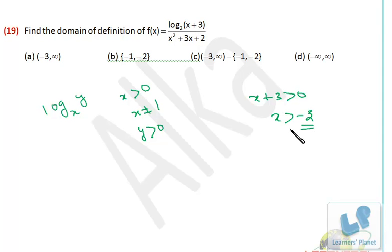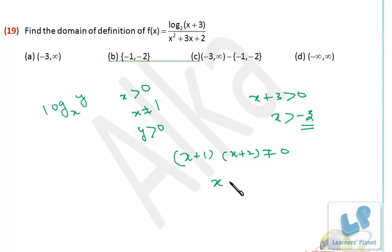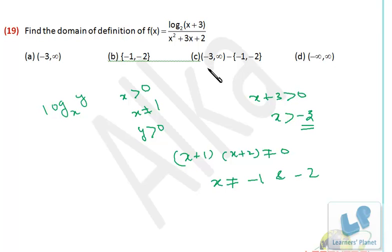That means x must be greater than minus 3. Now the denominator should not be 0. The denominator is x plus 1 and x plus 2, and that should not be equal to 0. So x should not be equal to minus 1 and minus 2. x should be greater than minus 3, so we need to consider all the values from minus 3 to infinity and discard minus 1 and minus 2. So that's the correct choice — two things are clubbed here: domain of the logarithm, and denominator should not be equal to 0.